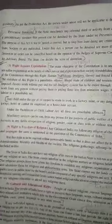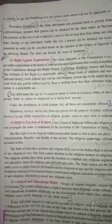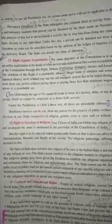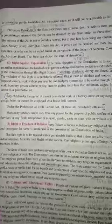Right against exploitation: the main objective of the constitution is to ensure that any person does not suffer exploitation at the hands of another person, and that an exploitation-free society is established. One person does not suffer exploitation at the hands of other people — that is the objective of the constitution through this right.